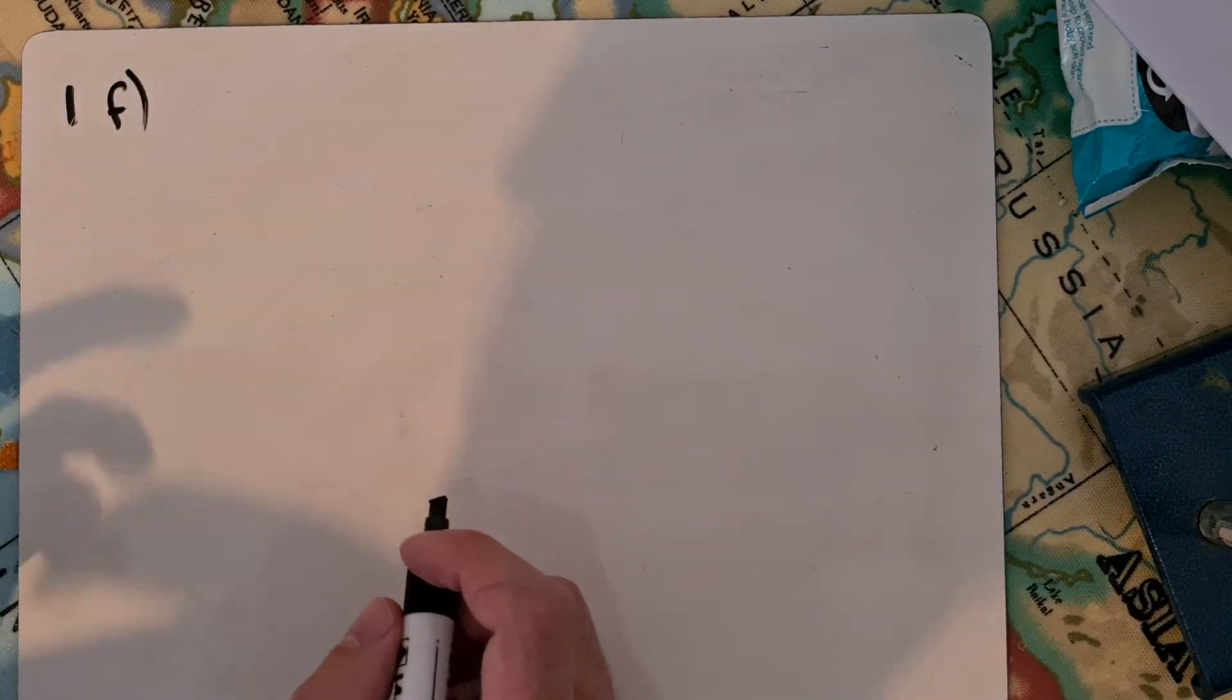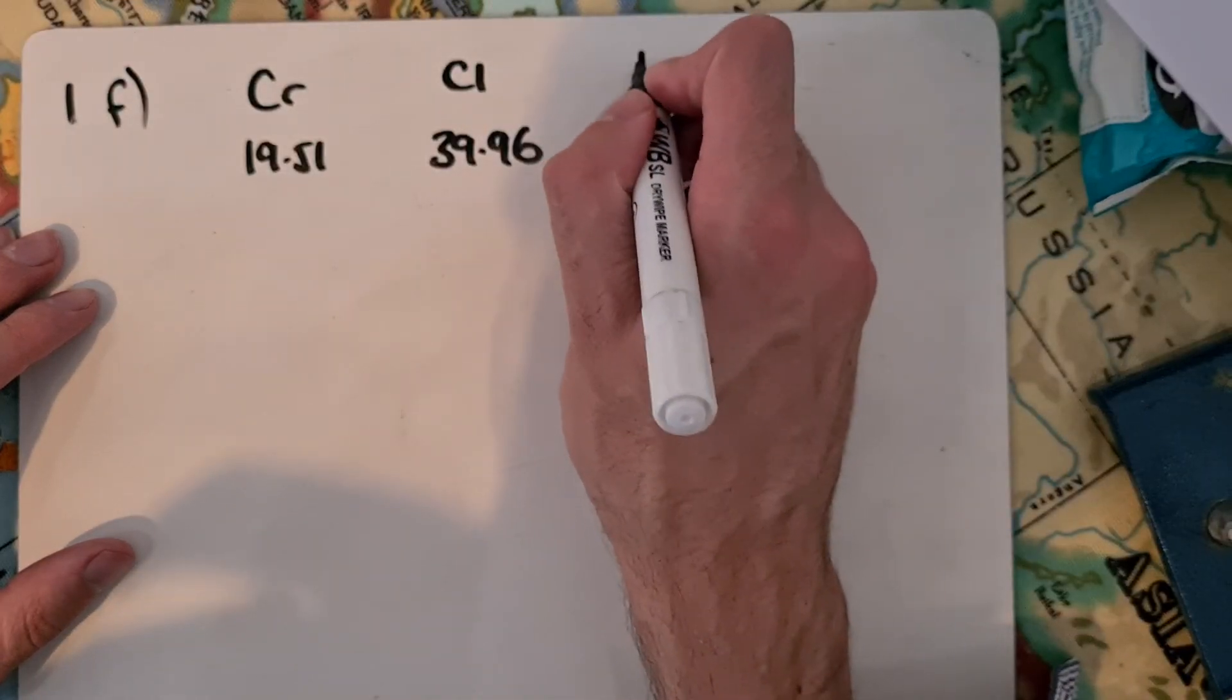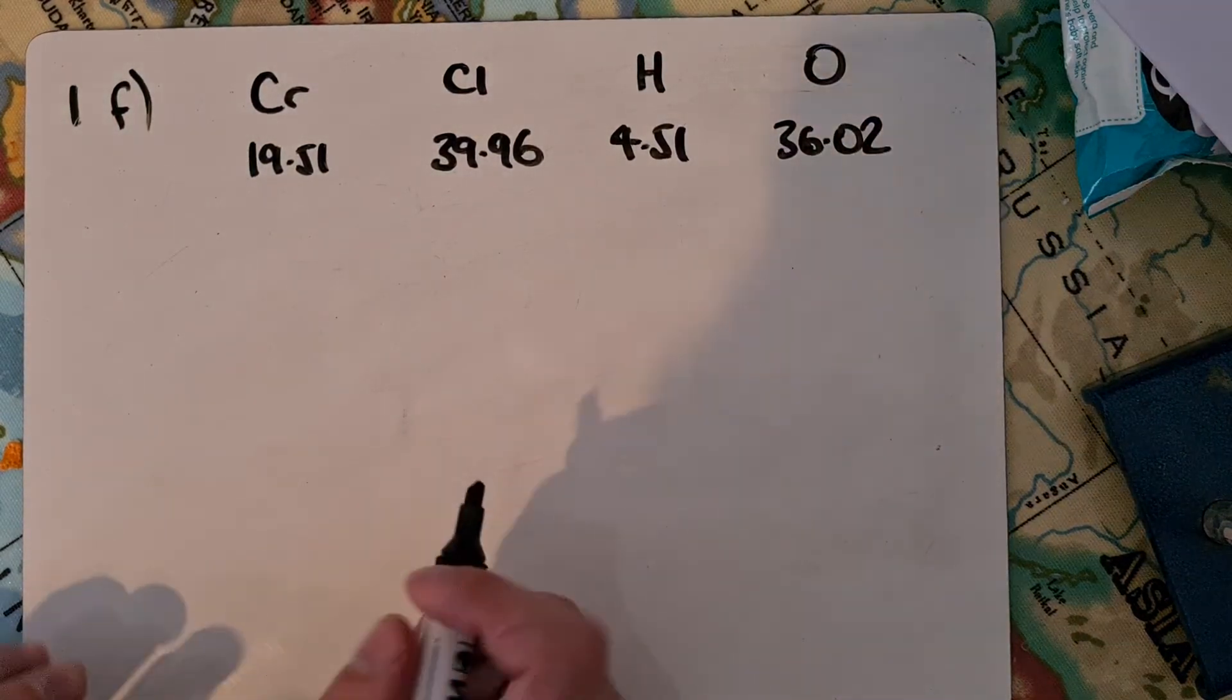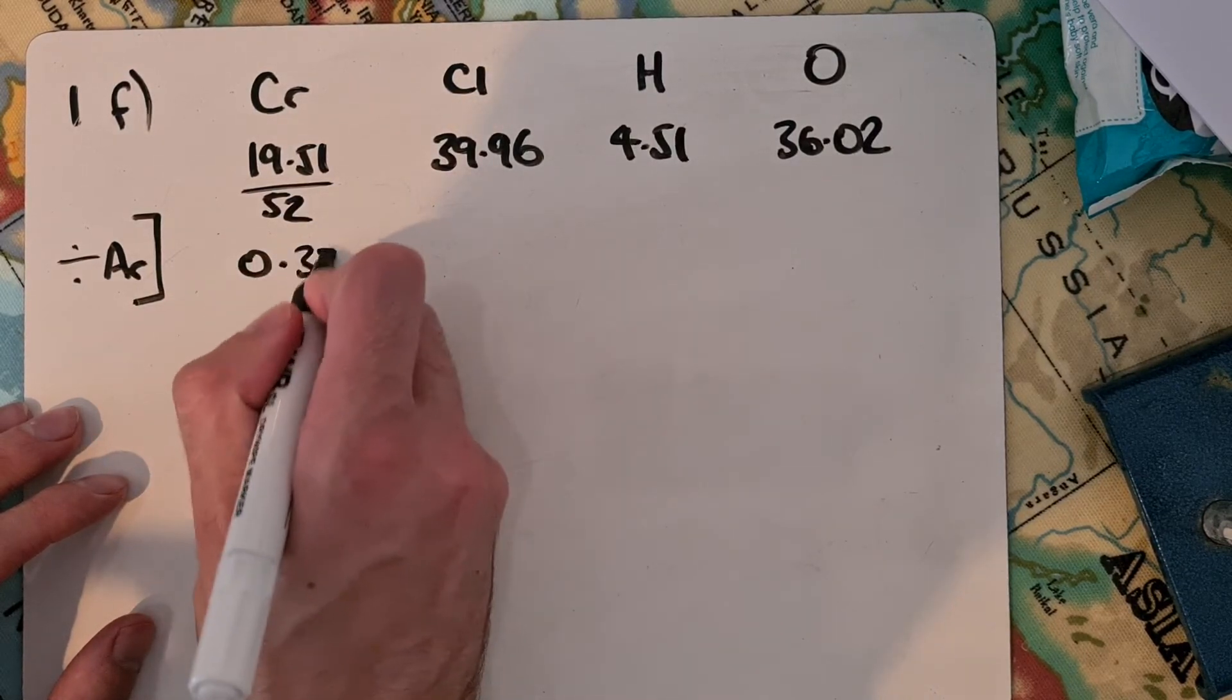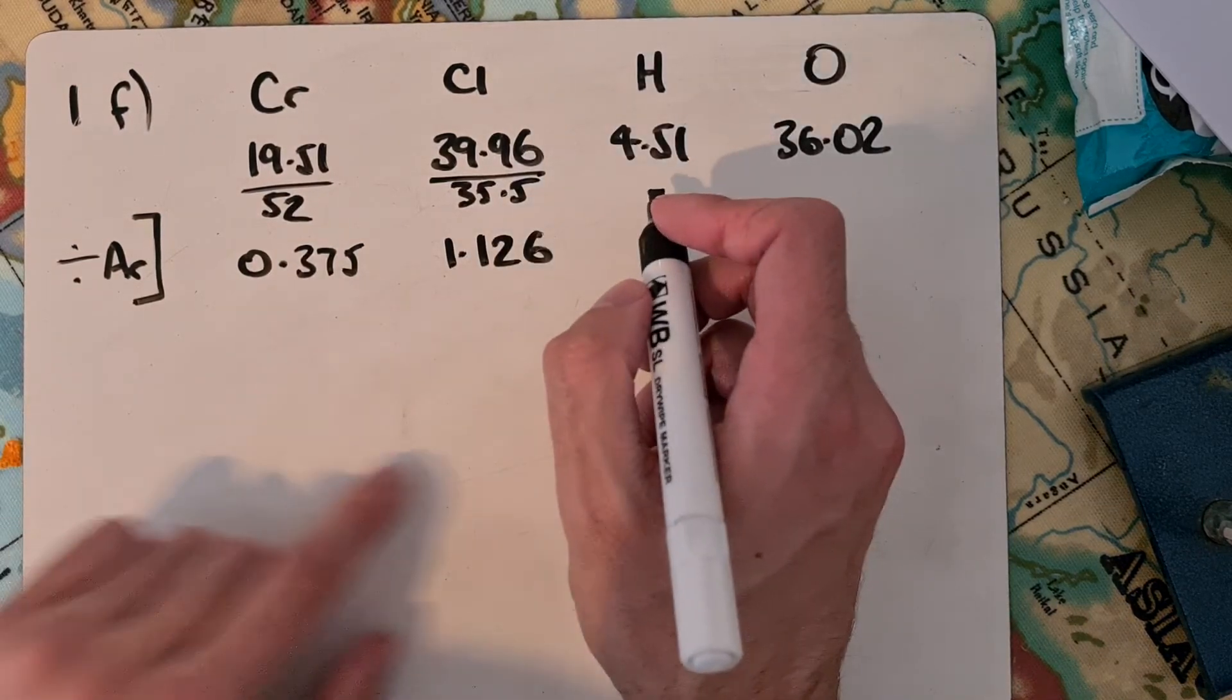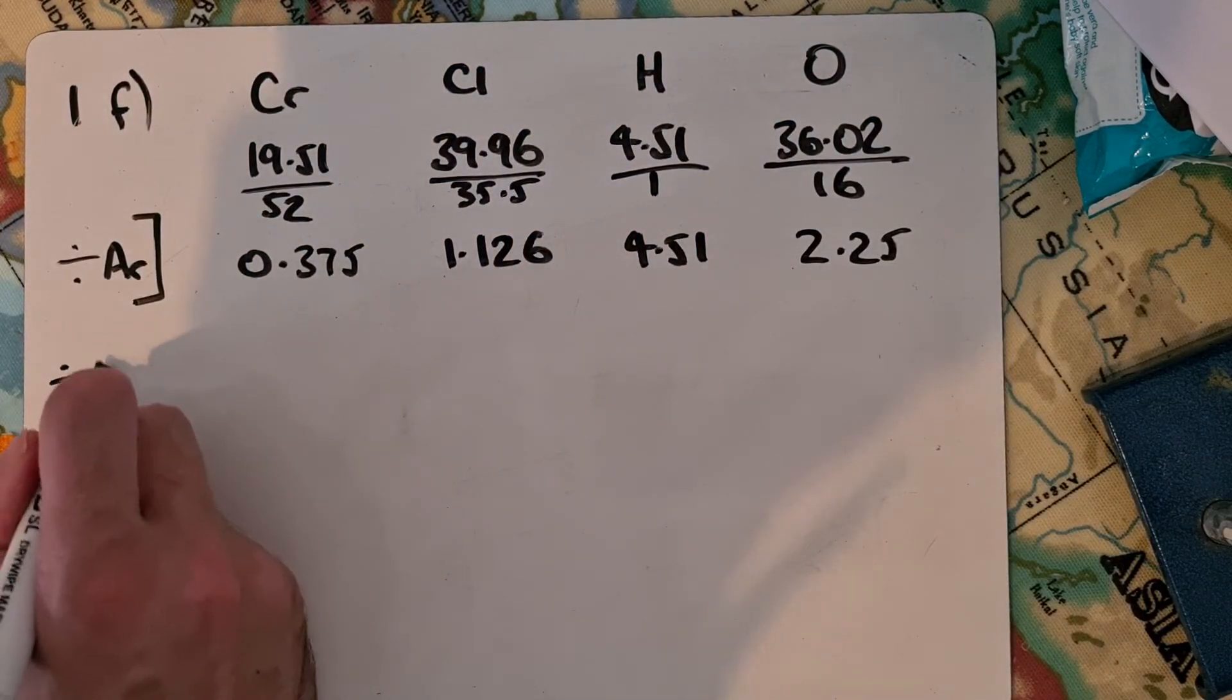Question F, another calculation. A hydrated salt compound A has the following percentage composition: chromium at 19.51%, chlorine at 39.96%, hydrogen at 4.51%, and oxygen at 36.02%. First thing is divide each by their individual atomic masses. Chromium by 52 gives 0.375, chlorine by 35.5 gives 1.126, hydrogen by 1 gives 4.51, and oxygen by 16 gives 2.25.